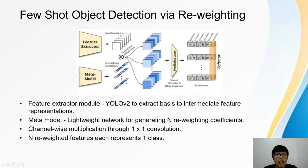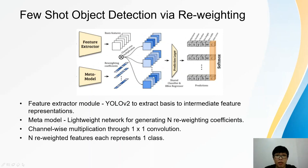Therefore, there are a total of n reweighting features where each reweighting feature represents a class. For example, the first reweighting feature represents the person class, the second reweighting feature represents the cat class, and the last reweighting feature represents the motorbike class.